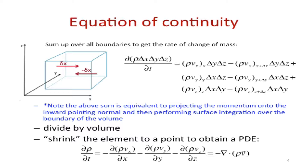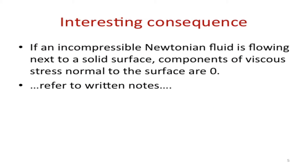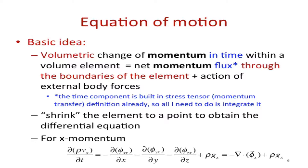Divergence is collecting what's coming through the boundaries in terms of momentum density. We do a similar procedure for the equation of motion. It's just that now we actually have a slightly different balance — we have to account for the combined momentum, as well as the action of any external forces.